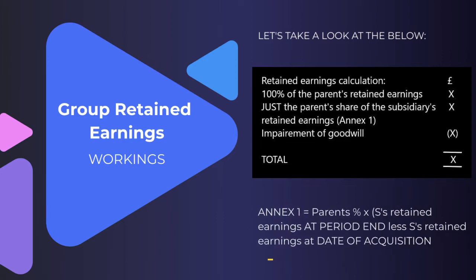To work out Annex 1, we take the parent's percentage multiplied by the subsidiary's retained earnings at period end, less the subsidiary's retained earnings at the date of acquisition. What you're effectively doing is multiplying the parent's percentage by the profits earned since they took control of that subsidiary.